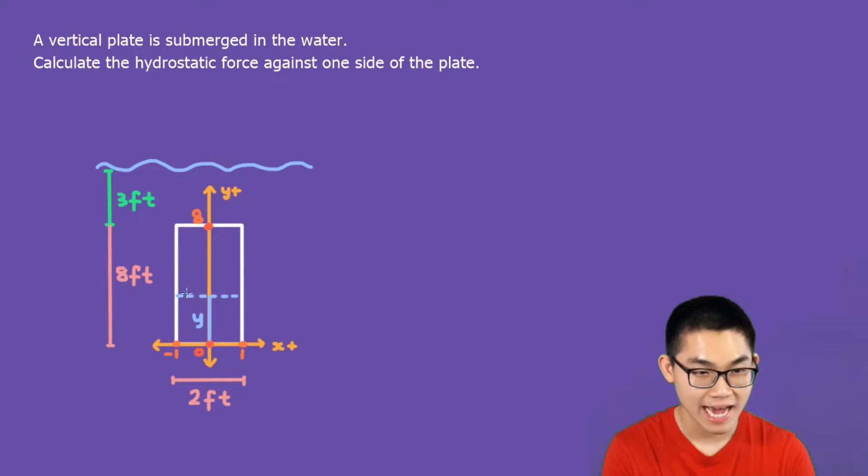Here I draw this line to represent our stripe and the distance from the center to this stripe is y. Now, we also know that from here to here is 1 and from here to here, the distance is also 1.